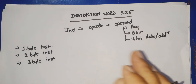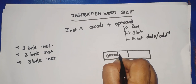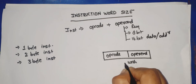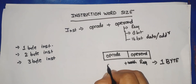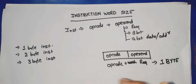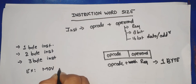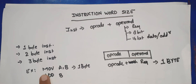How do you determine whether an instruction is one-byte, two-byte, or three-byte? When an instruction is a combination of opcode plus register, or just a simple opcode, it is a one-byte instruction. In a one-byte instruction, one byte includes both the opcode and the operand in the same byte. Examples of one-byte instructions are MOV A,B and ADD B.